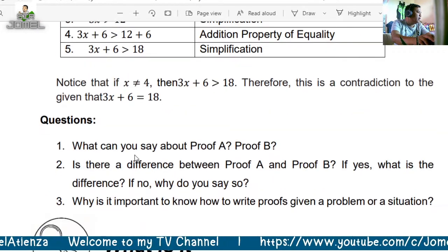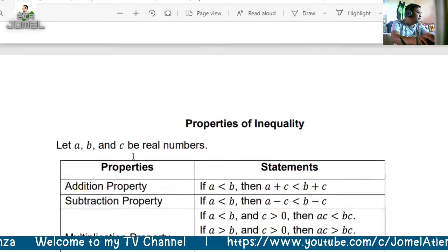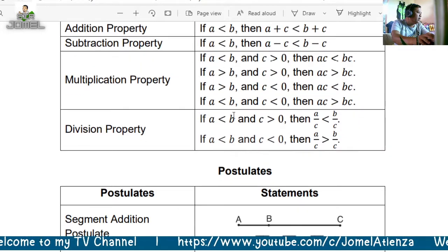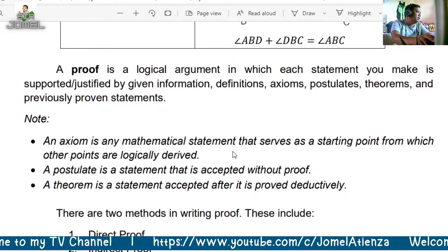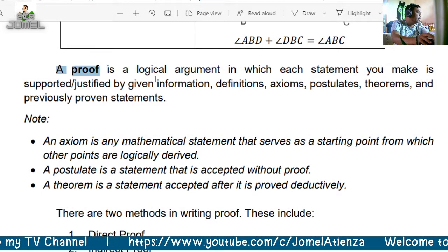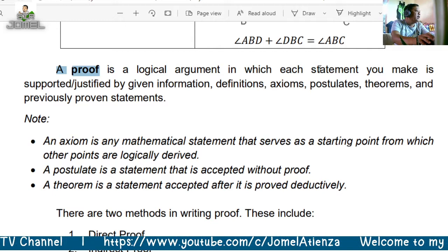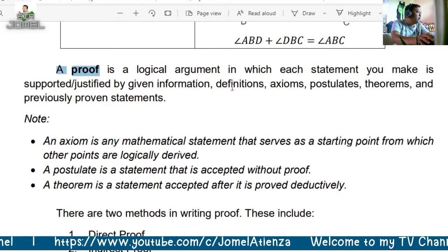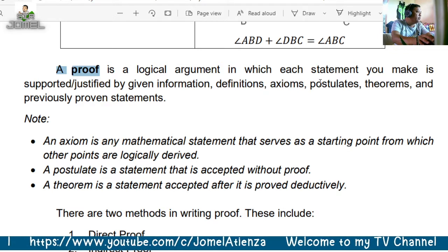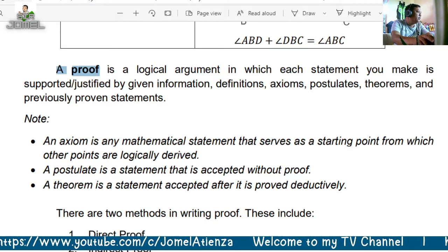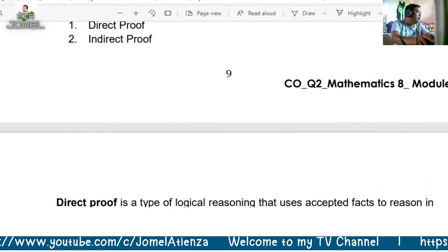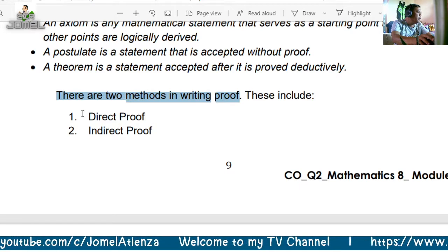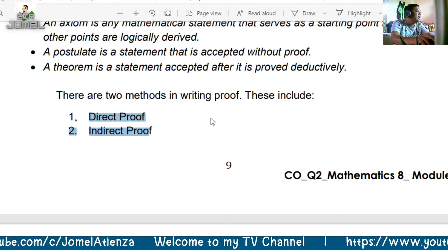This is what we call a two-column proof. As mentioned, a proof is a logical argument in which each statement you make is supported and justified by the given information, definitions, axioms, postulates, theorems, and previously proven statements. We use properties of equality and postulates. The two methods of writing proof are direct and indirect.